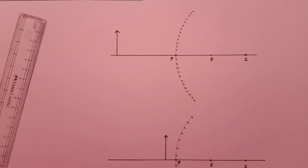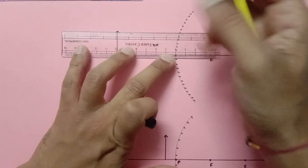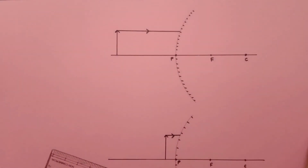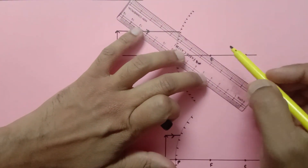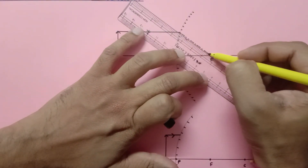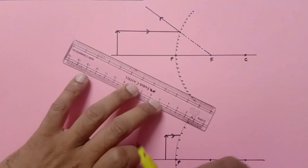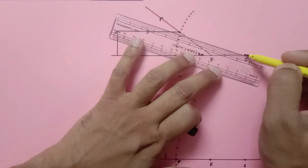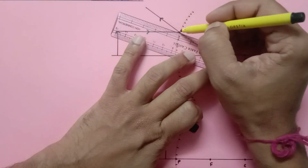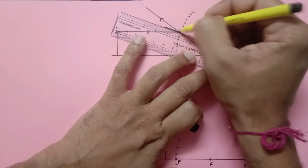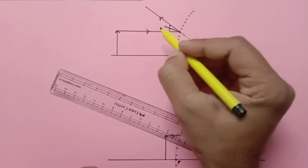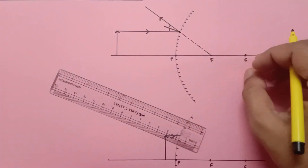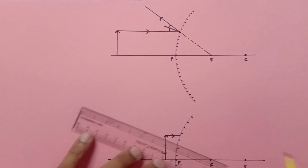Let us begin. The first ray is drawn parallel to the principal axis. After reflection it has to go as if passing through the focus — this is our point of incidence and this is our focus, so the reflected ray goes like this. The normal always passes through C; this is the center of curvature and this is our point of incidence, so the normal makes equal angles on either side. That is why the ray appears to pass through the focus.